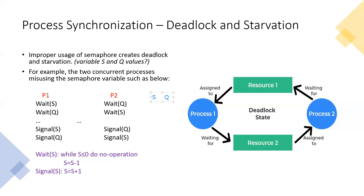We say there are two concurrent processes, P1 and P2, both concurrent, so they can be executed simultaneously. Initially, process one performs the wait operation over S. The initial value of S is 1, and variable Q value is 1. When the wait operation is performed, the condition checks: is S less than or equal to 0? S is 1, so no — condition false. So the next statement executes: S equals S minus 1, which makes S equal to 0.